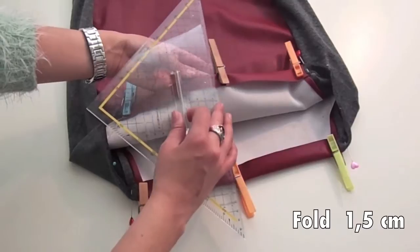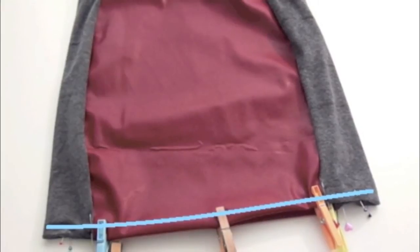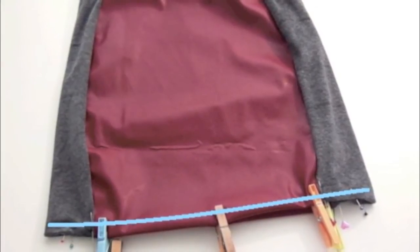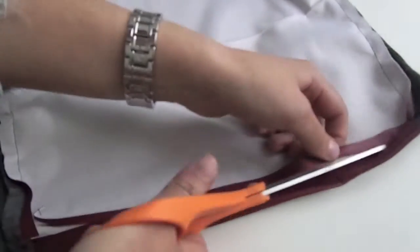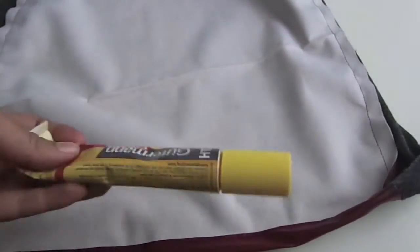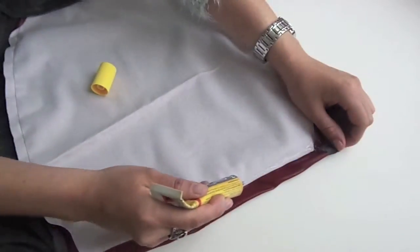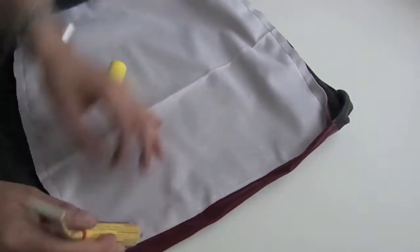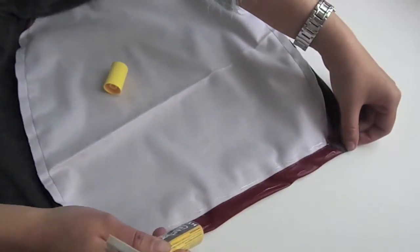Now the last step is finishing the hem. I fold it inside the fabric and sew it all across with a straight stitch. Then cut the excess fabric and use some fabric glue to finish it well.